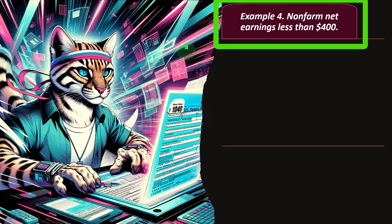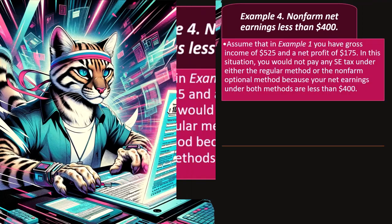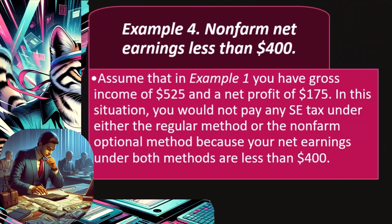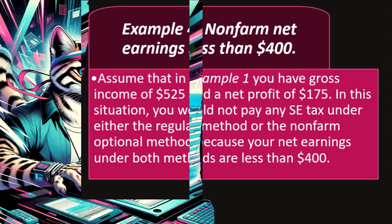Example four: non-farm net earnings less than $400. Assume that in example one you have gross income of $525 and a net profit of $175. In this situation, you would not pay any self-employment tax under either the regular method or the non-farm optional method, because your net earnings under both methods are less than $400.